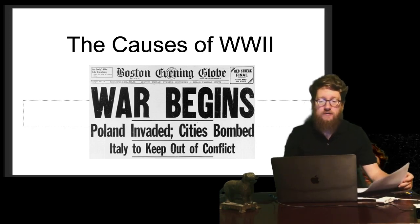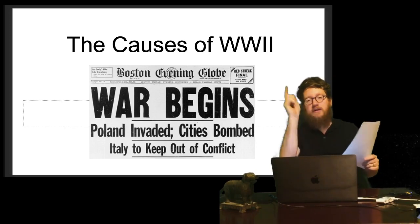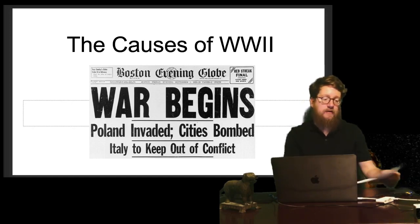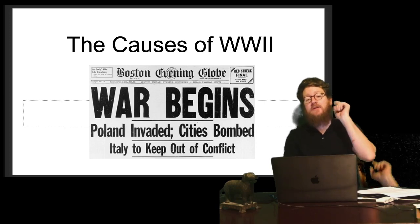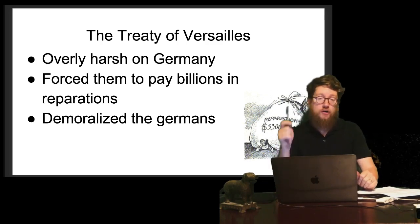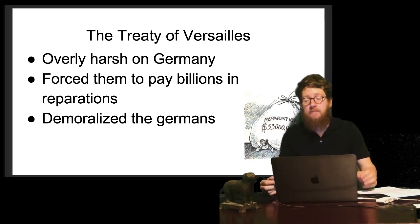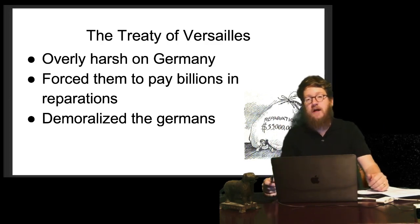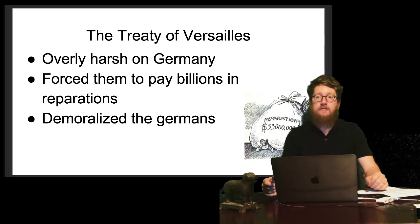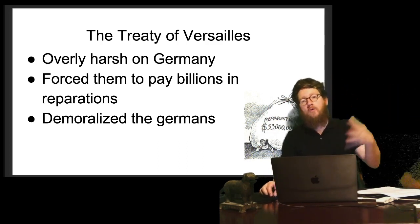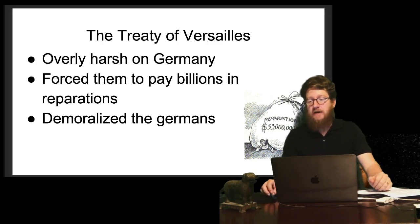We're going to be talking about the causes of World War II. What immediately set World War II off was when Nazi Germany invaded Poland, breaking the Treaty of Versailles. The first cause of World War II is the Treaty of Versailles. It was overly harsh on Germany — it made the German people angry, depressed, and it forced them to pay billions of dollars in reparations to the countries that defeated them. It demoralized them and led to an ethos of wanting to get revenge and prove themselves to the world.